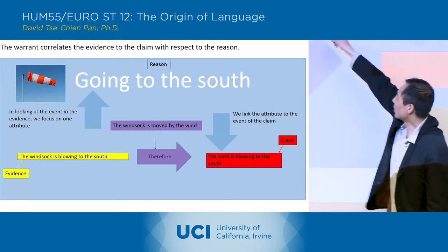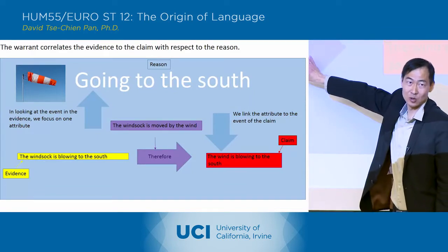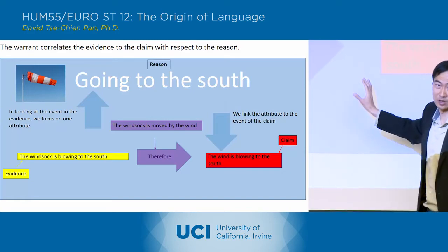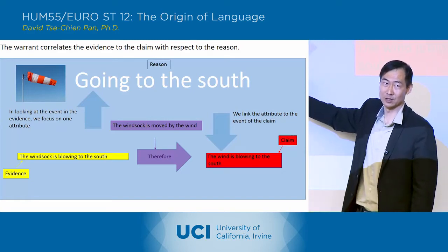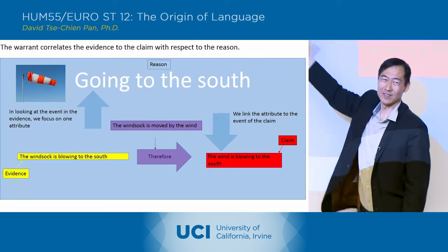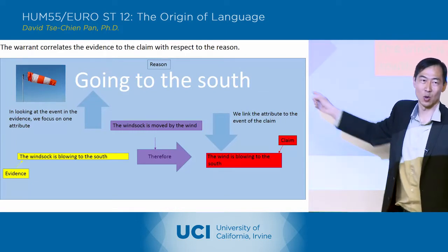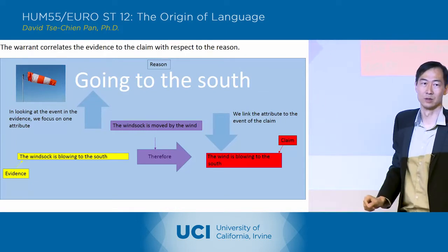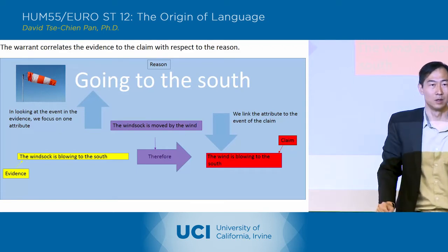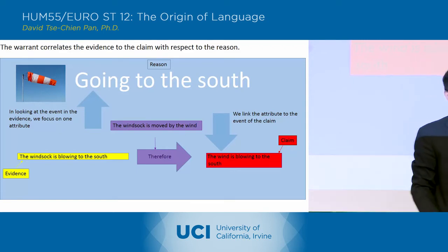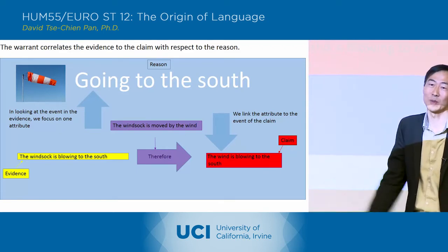So this is the warrant. The effect of this is to create that relationship. But in order to create that relationship, we have to have an explanation for why this relationship holds. So on the warrant you would explain the whole process? Yeah, you would explain that process essentially.